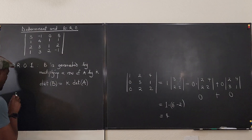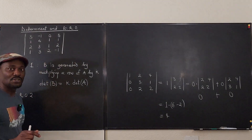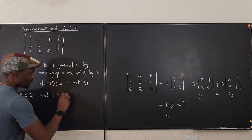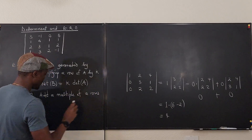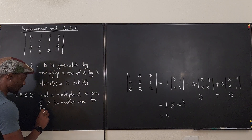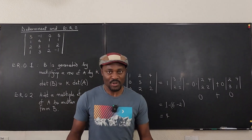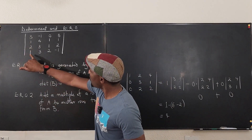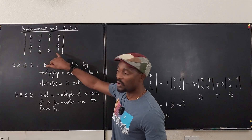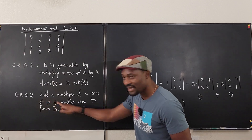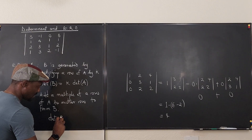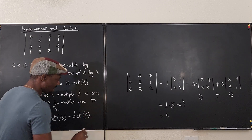Elementary row operation 2 is the one I recommend: add a multiple of one row of A to another row to form B. For example, to create a zero in a position, subtract row 4 from row 2, or add minus one times one row to another. This operation does not change the determinant, so det(B) equals det(A). That's the key advantage.